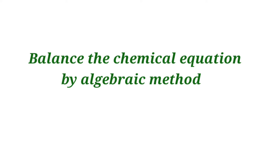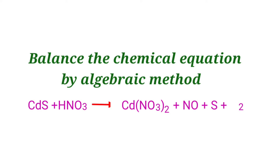Balance the Chemical Equation by Algebraic Method. Cadmium Sulphide plus Nitric Acid gives us Cadmium Nitrate plus Nitric Oxide plus Sulphur plus Water.